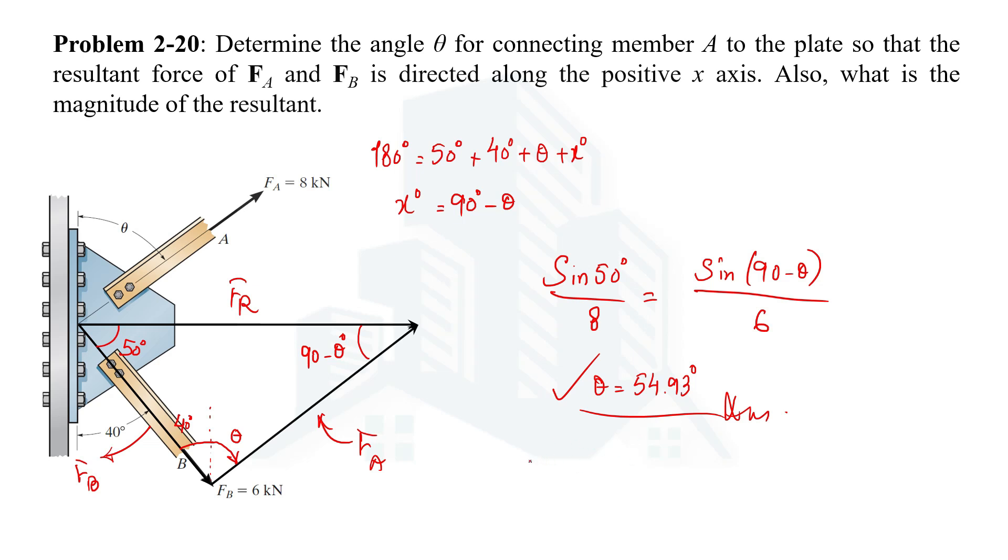So sine 50, opposite side is 8. Now we are interested in this, so the angle now would be sine theta plus 40. Theta we just calculated is 54.93, so if I put 54 plus 40 that will become 94.93, and that will be divided by FR.